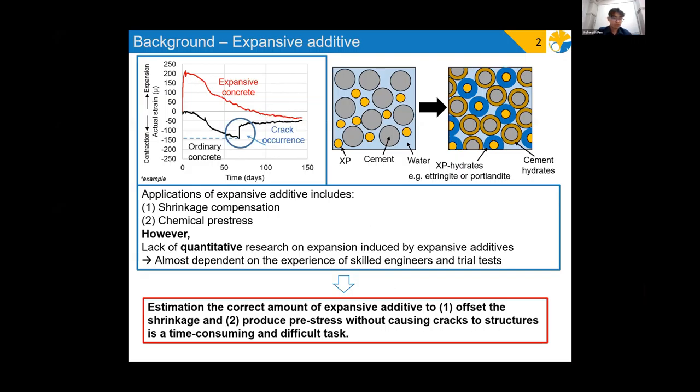To solve the issue of cracking from a material point of view, expansive additives could be used for shrinkage compensating effect and chemical pre-stressing. But even with such benefits, there is still a lack of quantitative research to estimate the amount of expansion produced. In Japan it mostly depends on the experience of expert engineers, and using too little would result in no expansion while using too much would result in cracks.